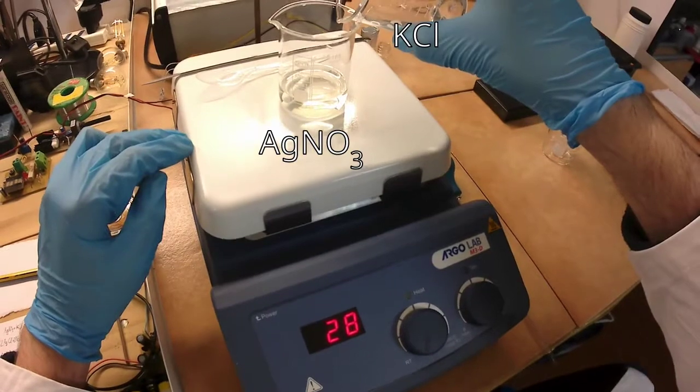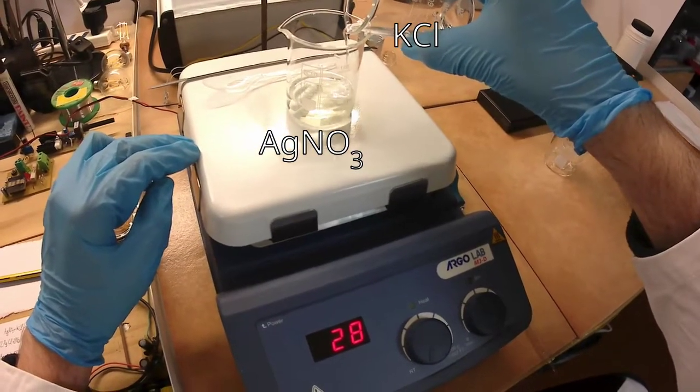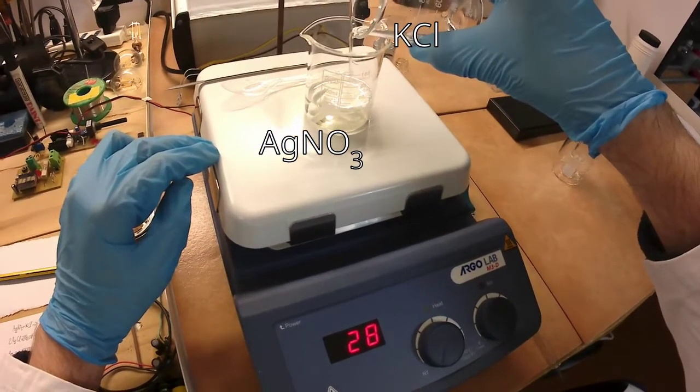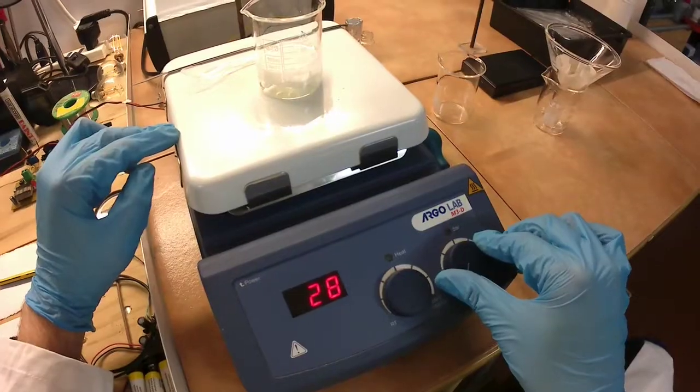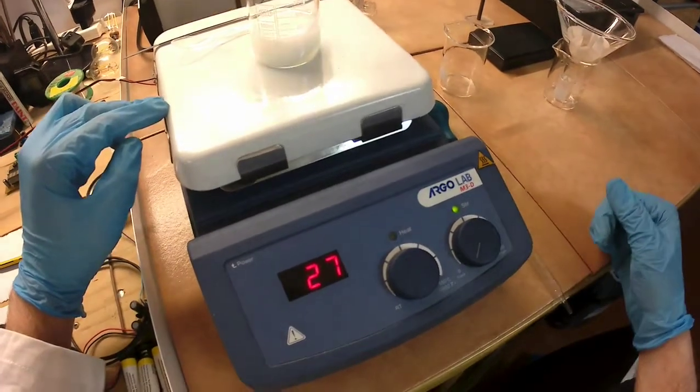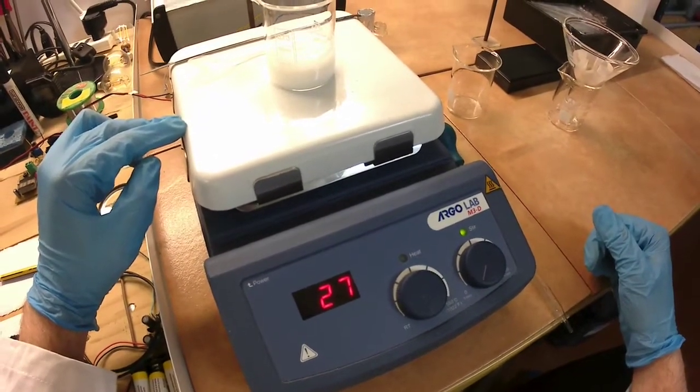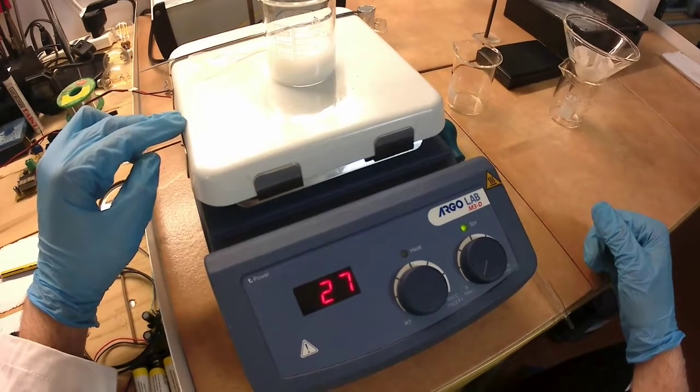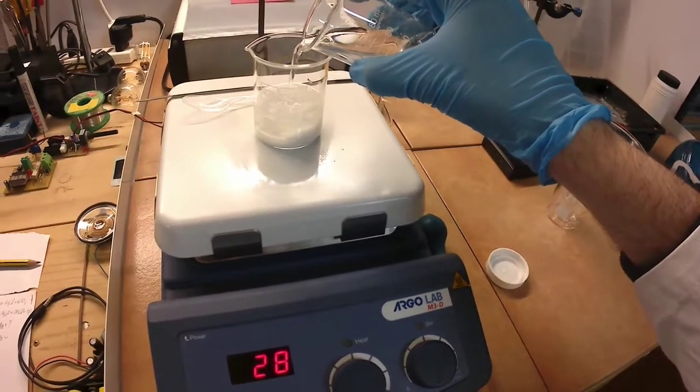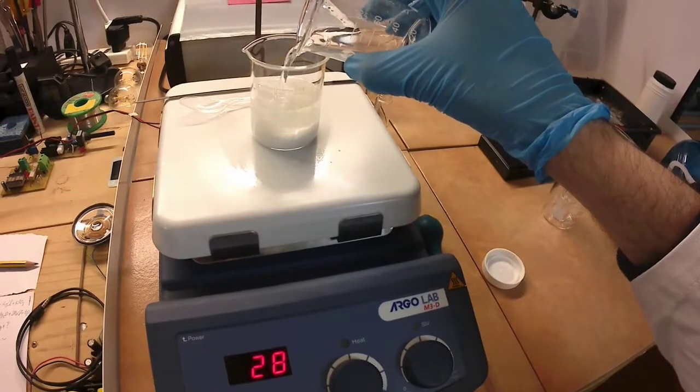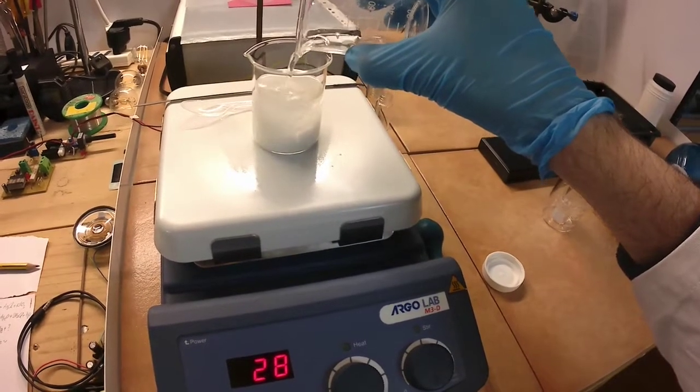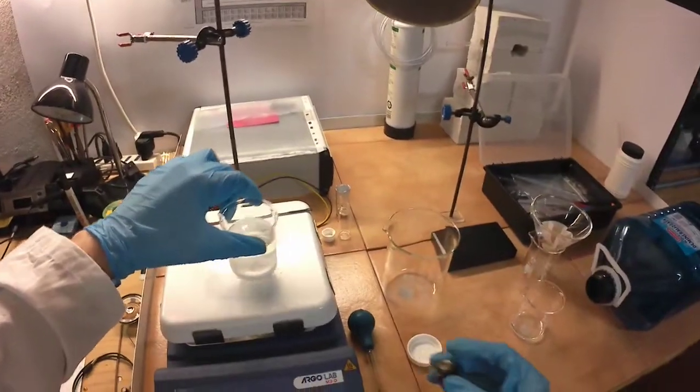Finally, it's time to precipitate the silver chloride. The precipitate needs to be decanted and washed with fresh deionized water several times. This is the step when we remove the impurities.